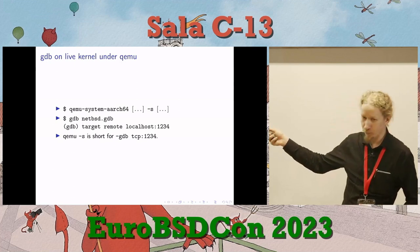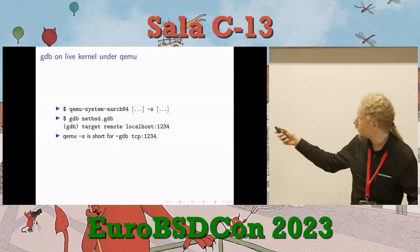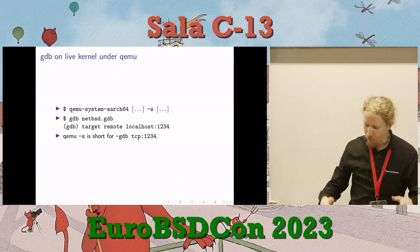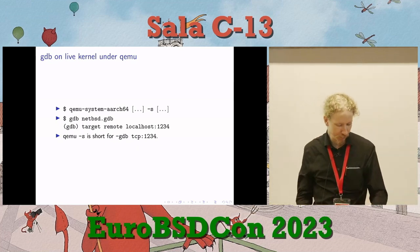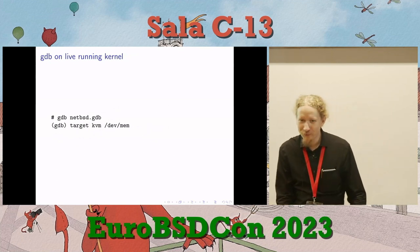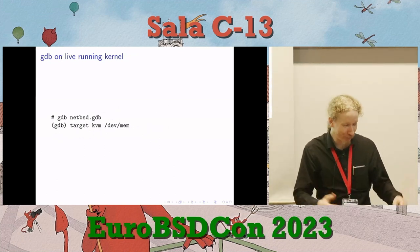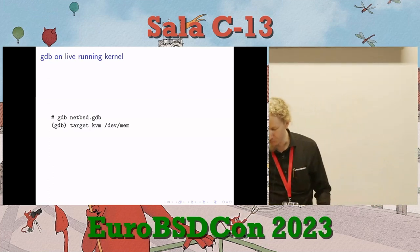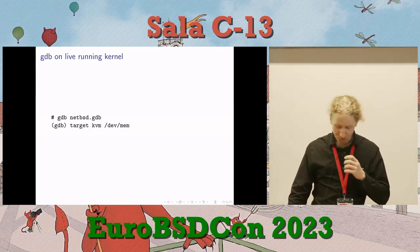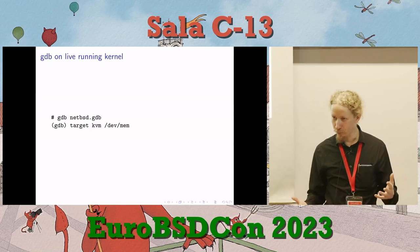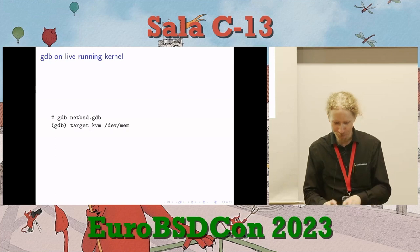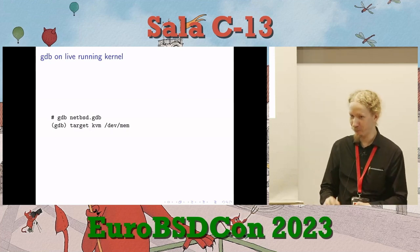QEMU -s is short for -gdb tcp::1234 — there should be two colons there, not one, sorry. There are other options for connecting QEMU to GDB. In fact, you don't even need to use QEMU — you can run GDB on a live kernel that you're running right now. With the netbsd.gdb file from the kernel you used to boot, you can run GDB on it and watch data structures changing in front of your eyes at the GDB prompt.